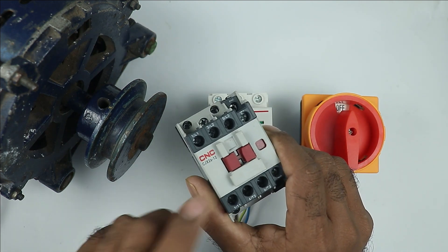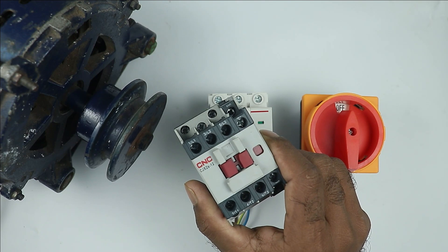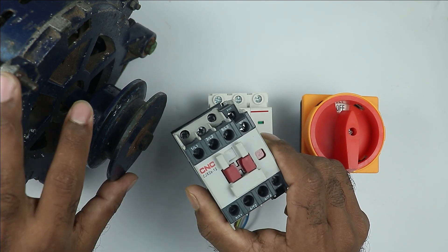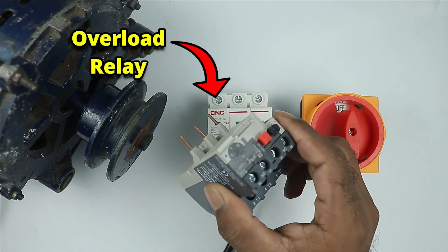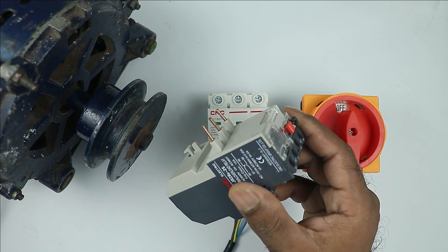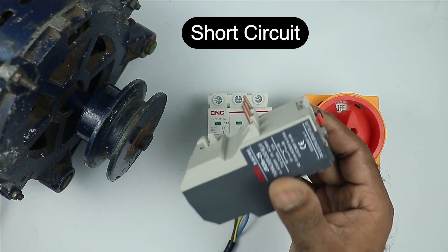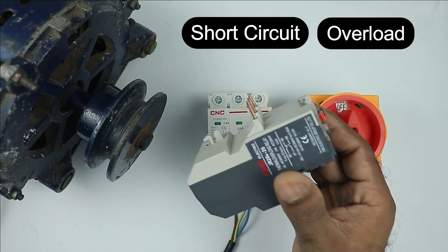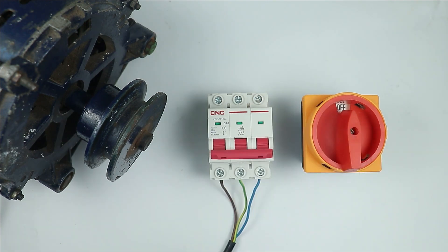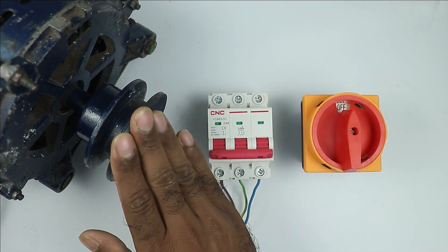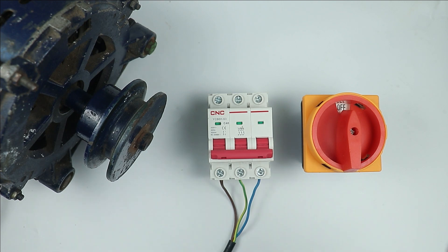There are a lot of advantages of using contactor. Along with this, for the protection of motor, we use overload relay. Through overload relay, we get protection from short circuit and overcurrent. If you don't want any kind of protection, you just only want to turn on and turn off this motor, then you can use this type of switch.